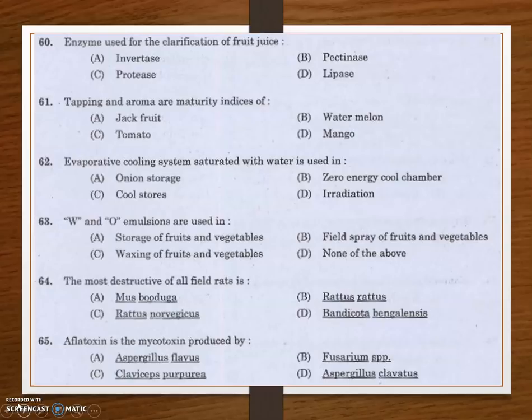Next question: tapping and aroma are maturity indices of — jackfruit, watermelon, tomato, or mango? The answer is jackfruit. Tapping and aroma are used to identify mature jackfruit.